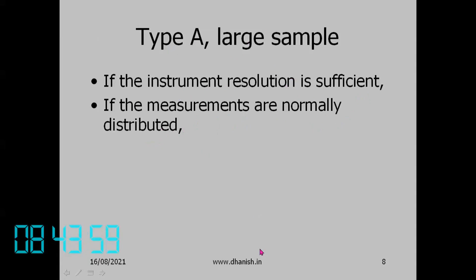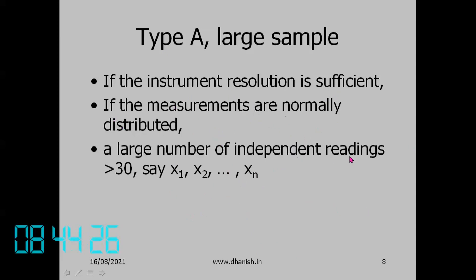A better check is a normal probability plot, which is now preferred with software. If measurements are normally distributed, we take a large number of independent readings — greater than 30. The threshold of 30 is somewhat arbitrary; the difference between n and n−1 for n=30 versus n=29 becomes very small. Generally, n ≥ 30 is considered a large sample.